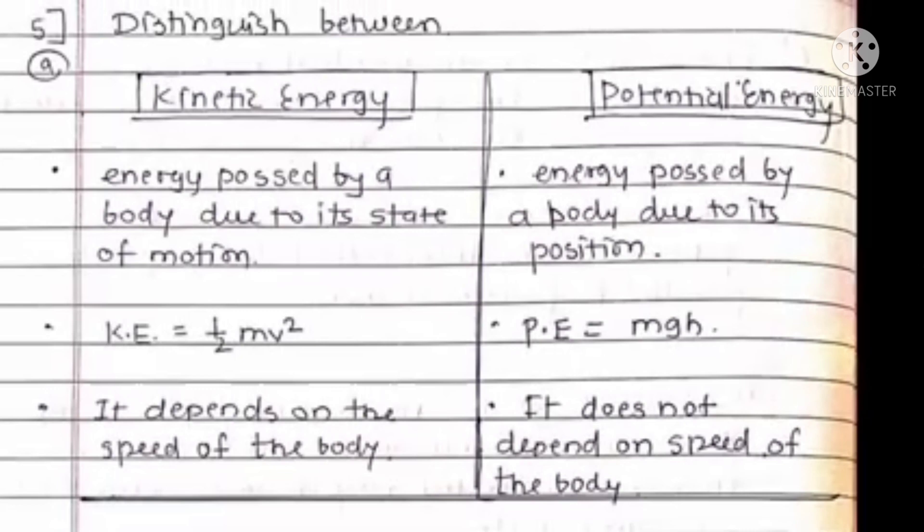Question number 5: Distinguish between kinetic energy and potential energy. Energy possessed by body due to its state of motion is known as kinetic energy, while energy possessed by body due to its position is known as potential energy. Formula for kinetic energy is half mv squared while potential energy is equal to mgh.